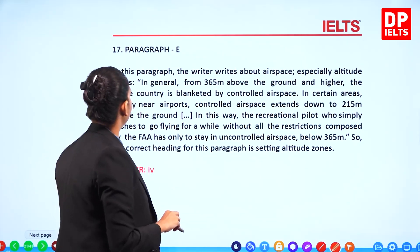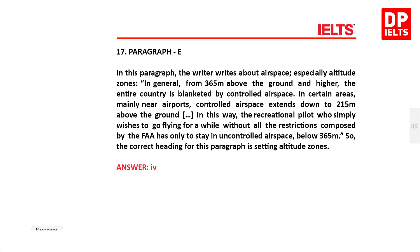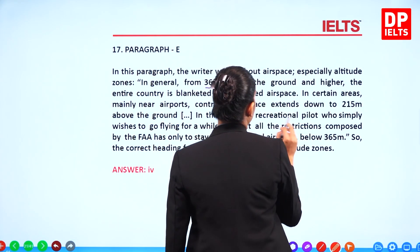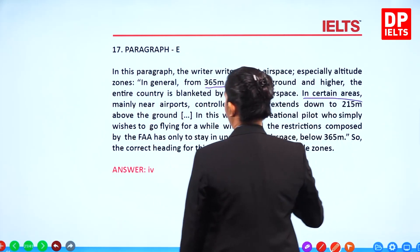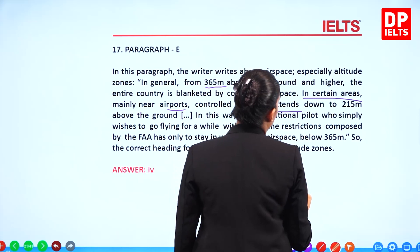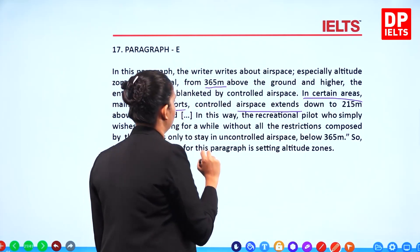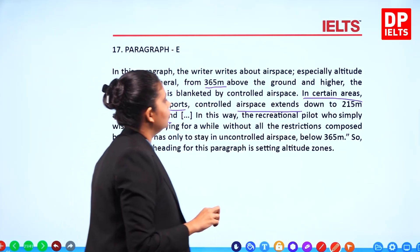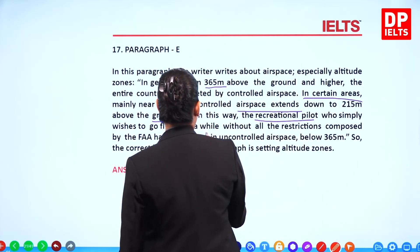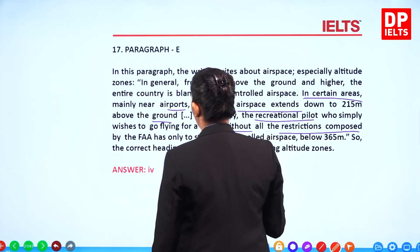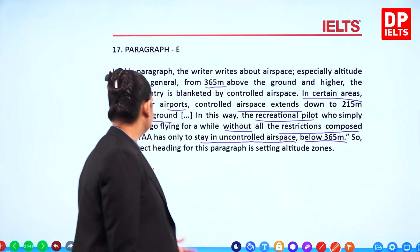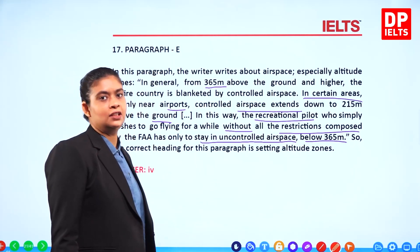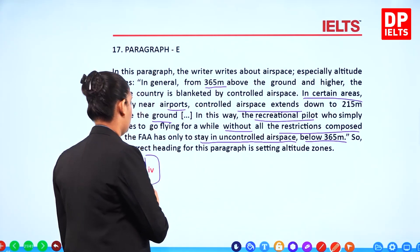Question 17, paragraph E: The writer describes airspace altitude zones. In general, from 350 meters above the ground and higher, the entire country is blanketed by controlled airspace. In certain areas near major airports, controlled airspace extends down to 250 meters. A recreational pilot who simply wants to fly without FAA restrictions has only to stay in uncontrolled airspace below 365 meters. The correct heading is 'Setting Altitude Zones', so the answer is 4.